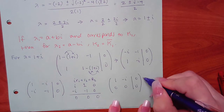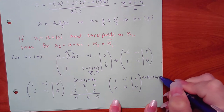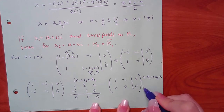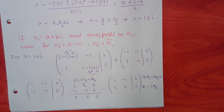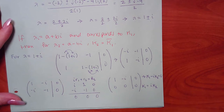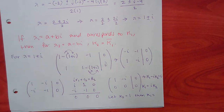From the top equation: k1 minus i·k2 equals zero, so k1 equals i·k2. Can't let k2 equal zero — even with the i, multiplying by zero gives zero for both. No fraction to eliminate, so let k2 equal 1.